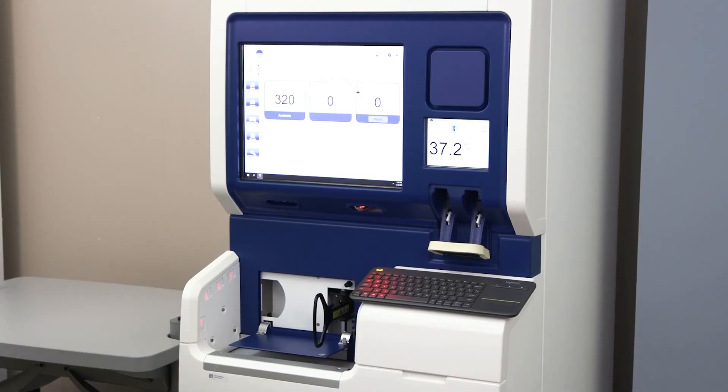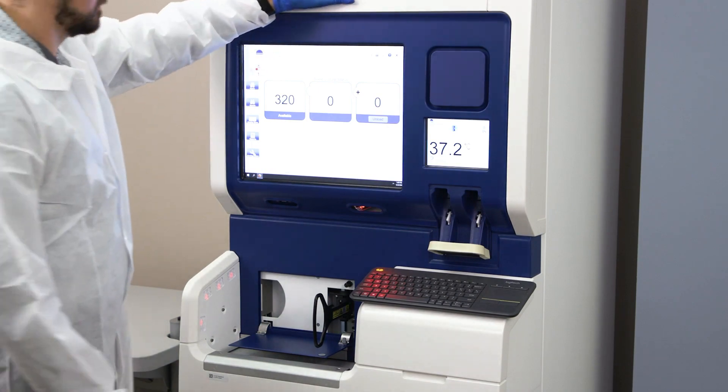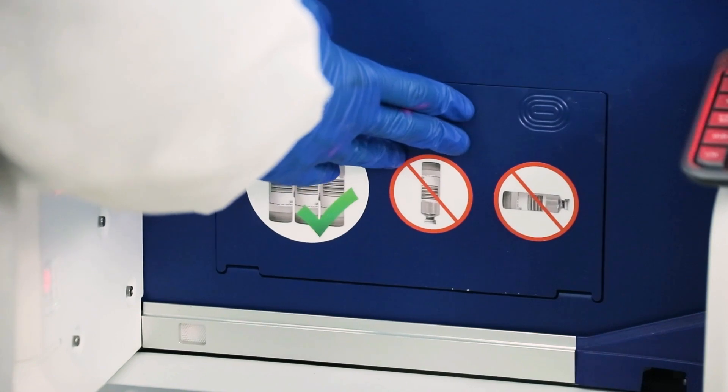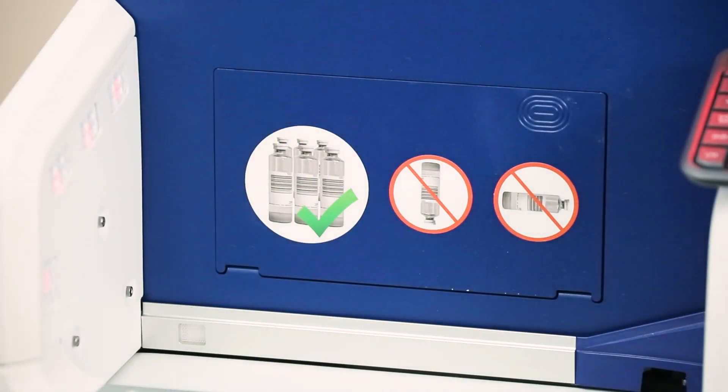While pushing firmly on the top of the instrument above the large display, swing the door latch inward to the left until flush against the instrument to the locked position. Lift the door latch cover up and close the door latch cover.